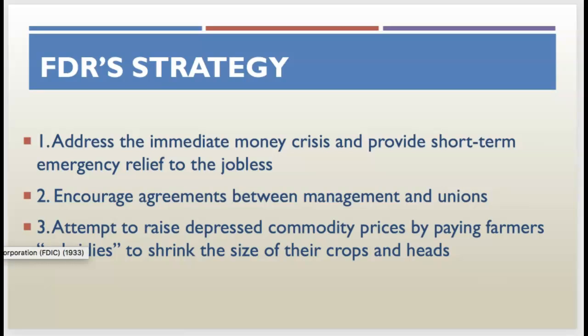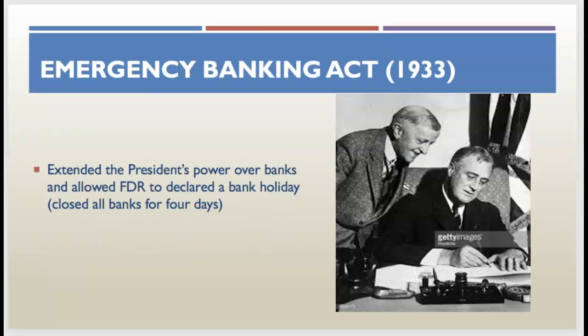For the first New Deal, the goal is to provide a sense of economic relief and help transition the country to more active government and a belief in economic justice. One of the first things FDR is going to do with Congress is build American trust in the banks again, and so he is going to get Congress to pass something called the Emergency Banking Act.